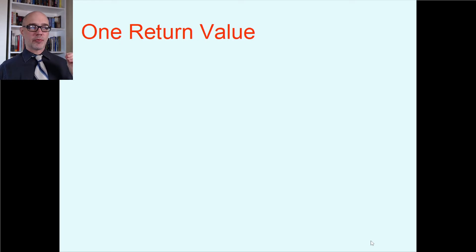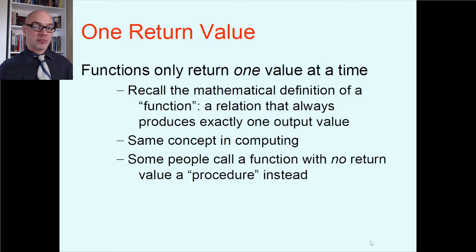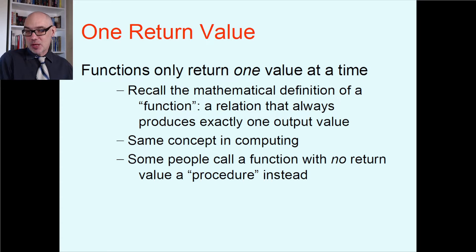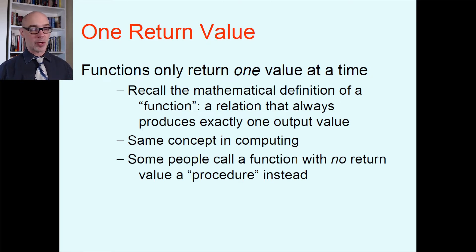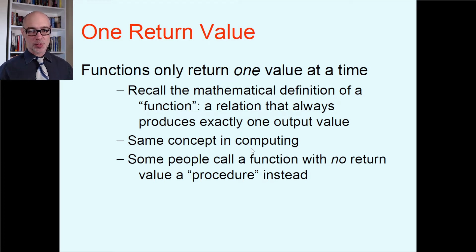Functions only return one value — just one value at a time. If you think back to the mathematical definition of a function, the whole point is a relation that always produces exactly one output value. Our C++ functions are doing exactly that. Functions can only return one value; you don't have any other options.